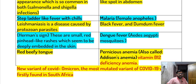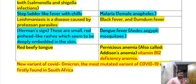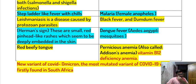A red beefy tongue is a sign of pernicious anemia, also called Addison's anemia, which is caused by vitamin B12 deficiency. The Omicron variant is the most mutated variant of COVID-19 and was first identified in South Africa.